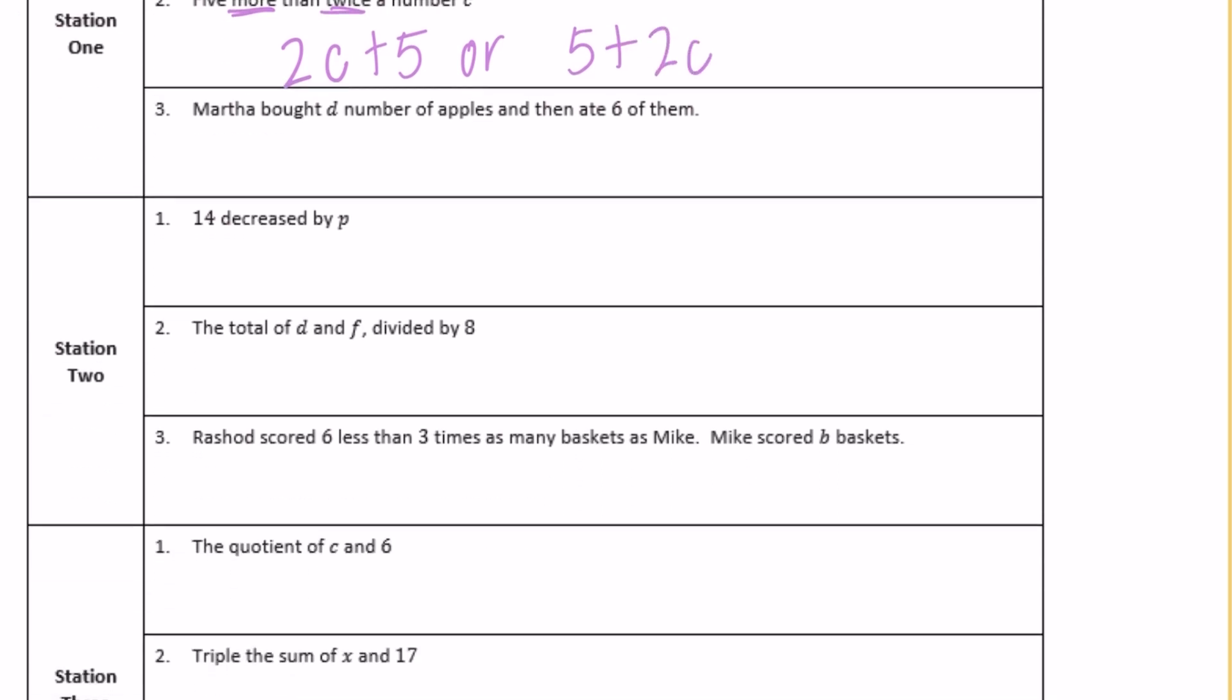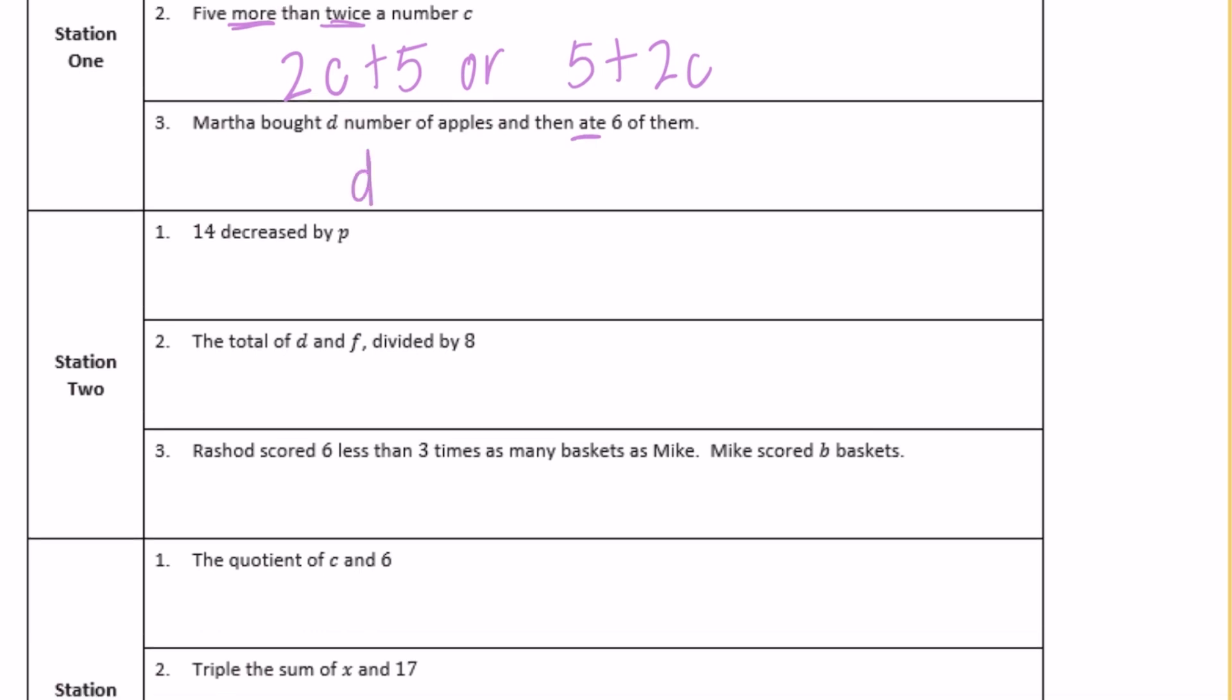Number three, Martha bought d number of apples and then ate six of them. If she ate them, that means she doesn't have them anymore. So she had d apples and then ate six, so we subtract six: d minus 6.